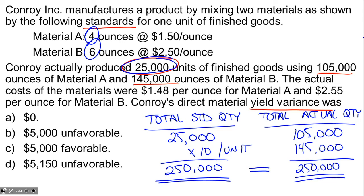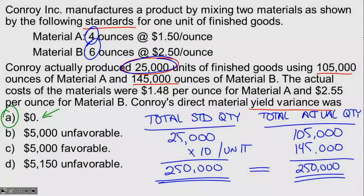The total standard quantity and the total actual quantity are equal to each other — it's zero variance, so the answer has to be zero. There was no direct material yield variance. Rule of zero: if the total standard quantity and total actual quantity are the same, zero is automatically the correct answer.